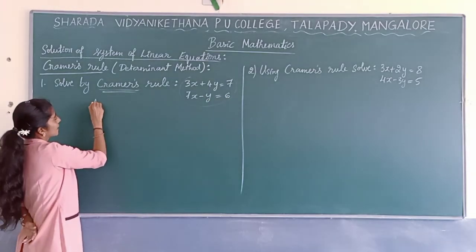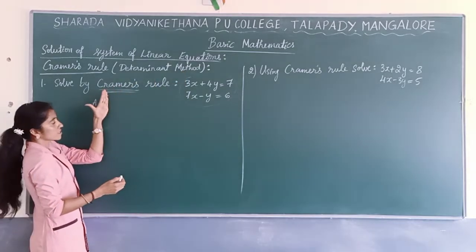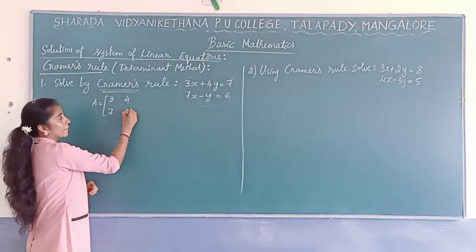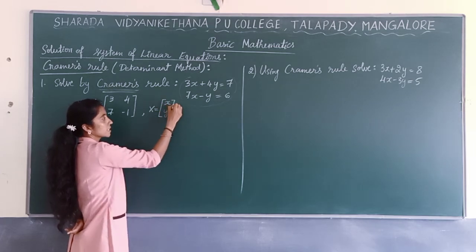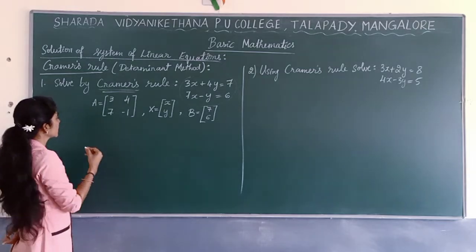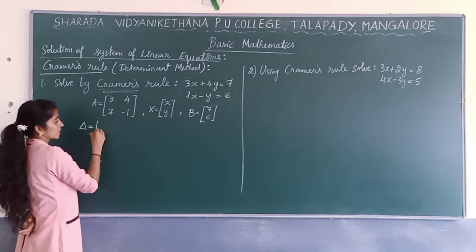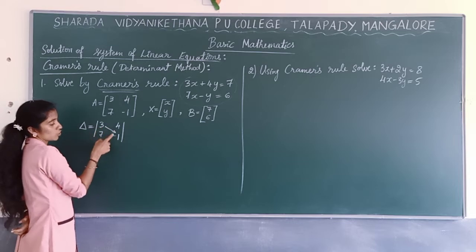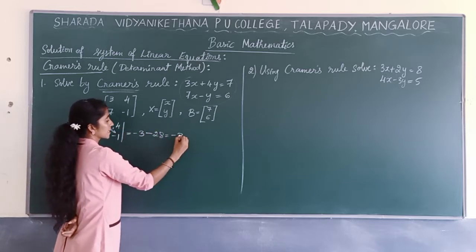Matrix A is written with coefficients of x in the first column and coefficients of y in the second column: A = [[3, 4], [7, -1]]. Matrix X is [x, y] and matrix B is [7, 6]. Now we find delta, the determinant of A. Delta = 3×(-1) - 7×4 = -3 - 28 = -31.